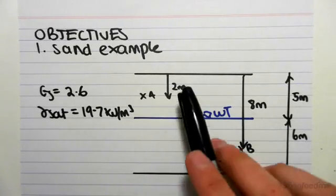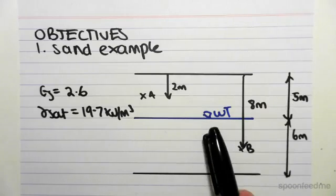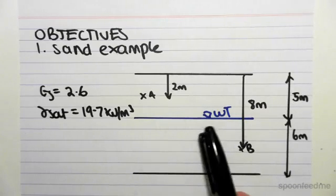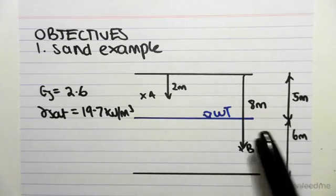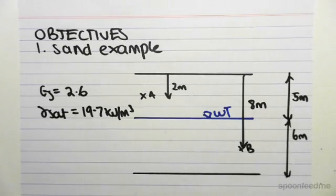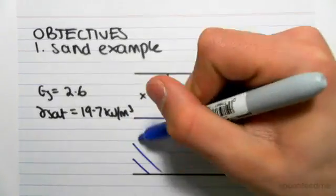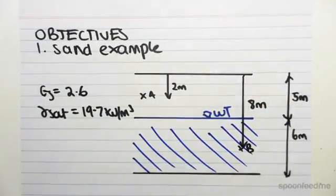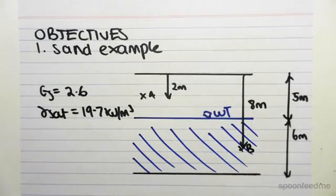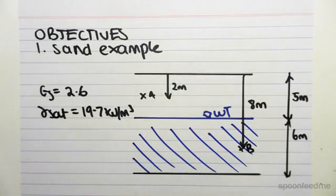So we have two layers. We've got one layer and we've got a water table which is five meters below the surface. For a sand, everything below the water table will become saturated. We want to find the effective stress at point A and point B.